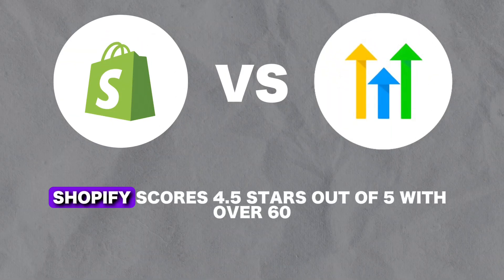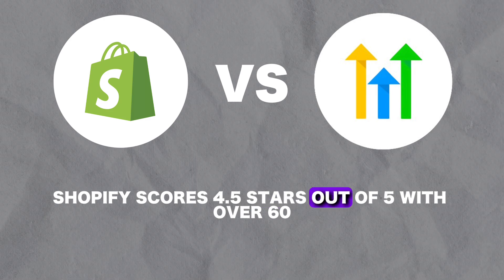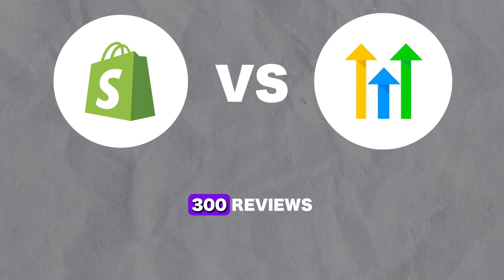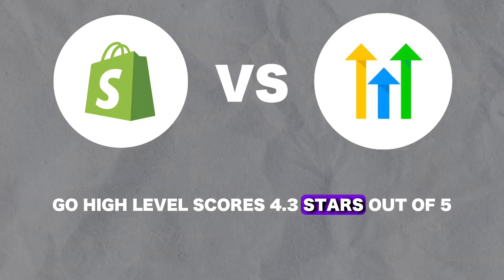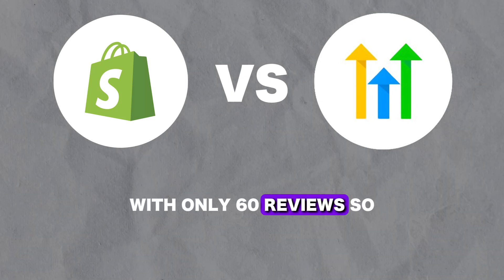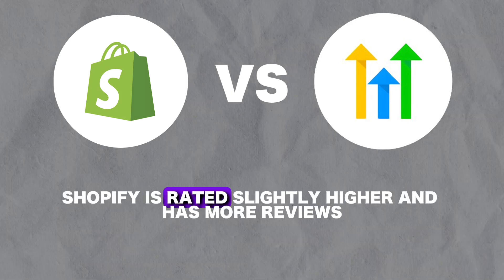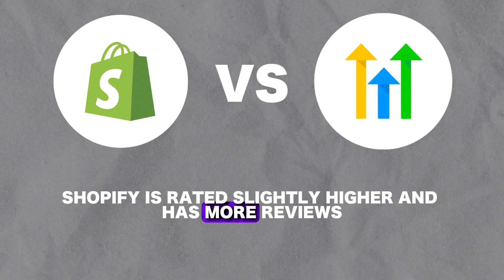One category I like to look at when making a decision like this is customer reviews — what better way to find out which product is better than to look at the opinions of hundreds of experienced users? On Capterra, Shopify scores 4.5 stars out of 5 with over 6,300 reviews. GoHighLevel scores 4.3 stars out of 5 with only 60 reviews. So Shopify is rated slightly higher and has significantly more reviews.